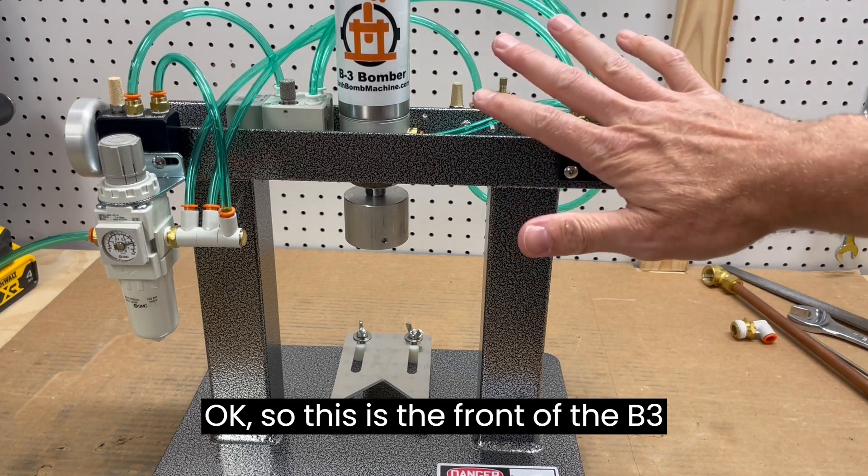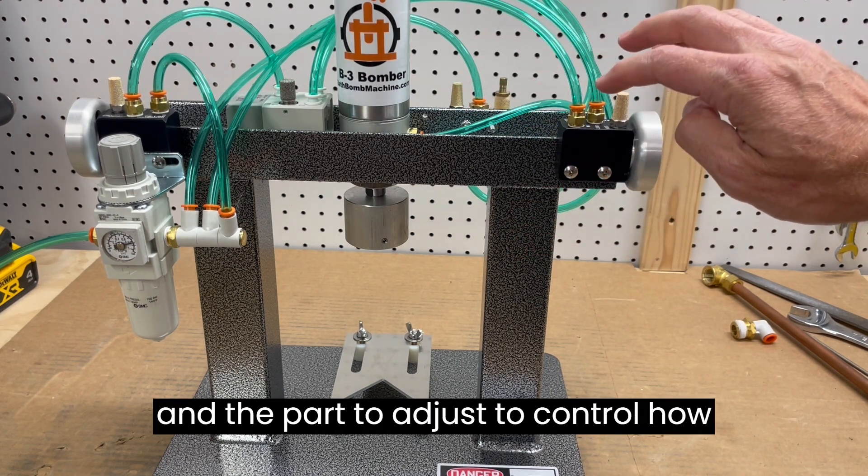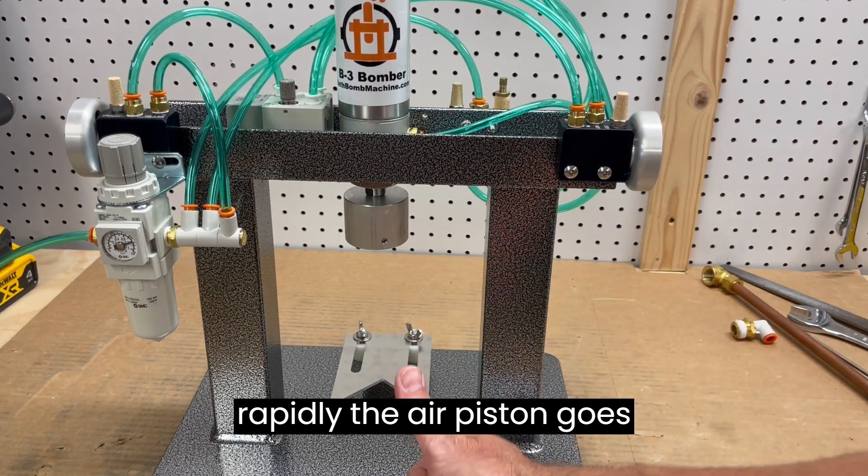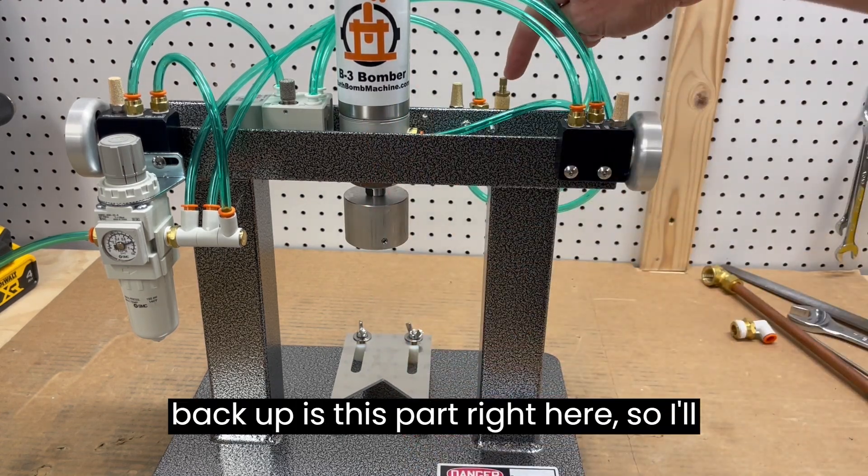Okay, so this is the front of the B3, and the part to adjust to control how rapidly the air piston goes back up is this part right here.